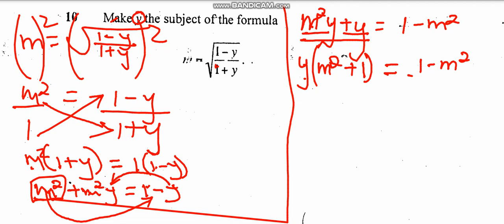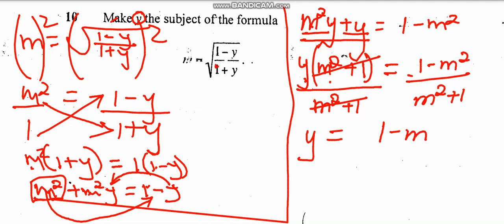Then after that, for you to get the value of y or to make y the subject of the formula, you're going to divide both sides by the bracket, which is m squared plus 1. So this one into this one, y is equal to 1 minus m squared over m squared plus 1.